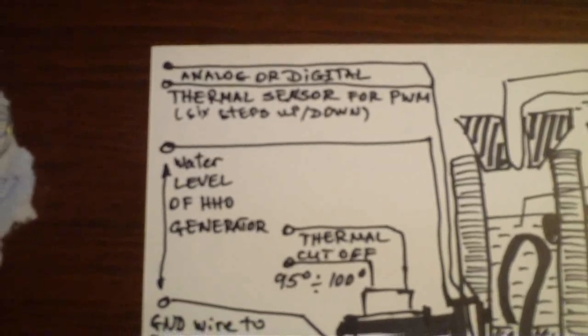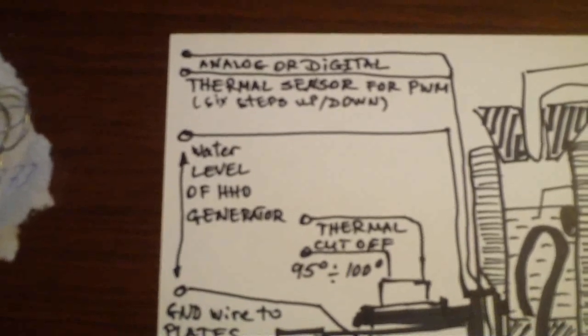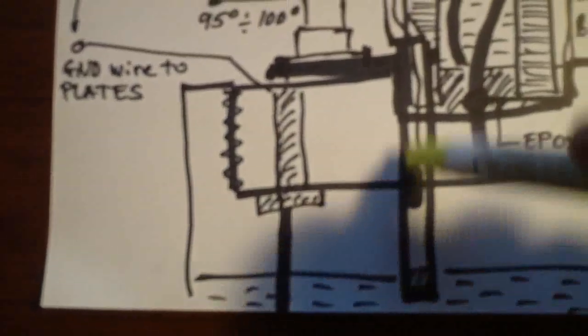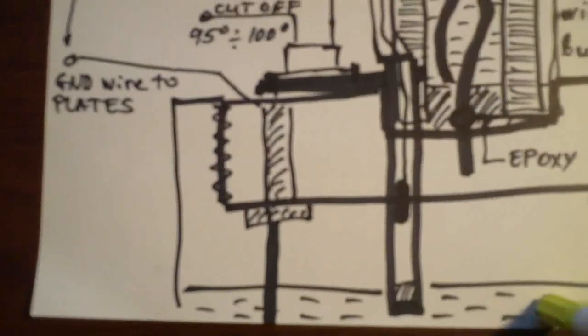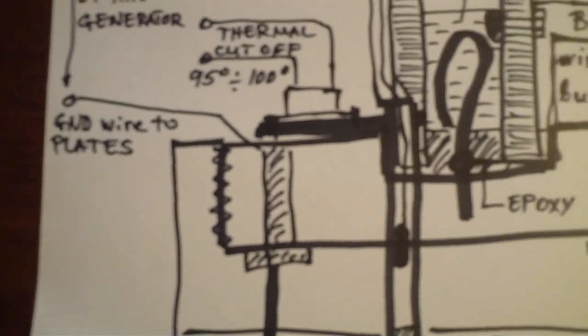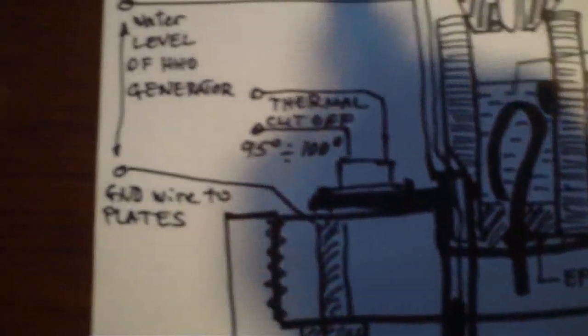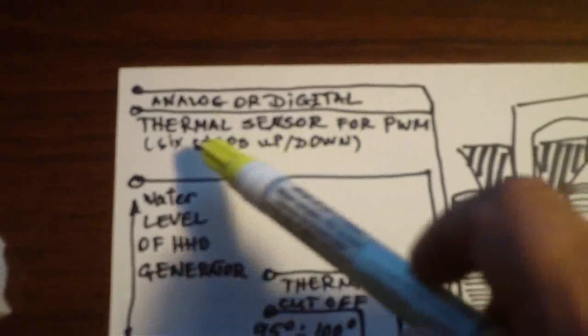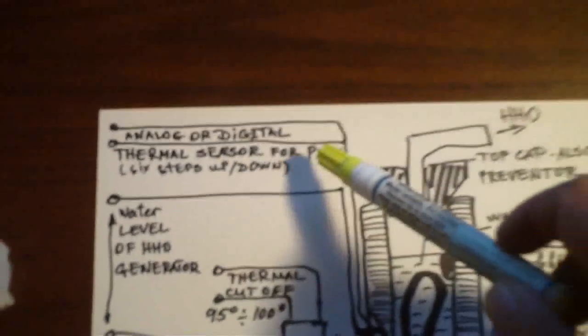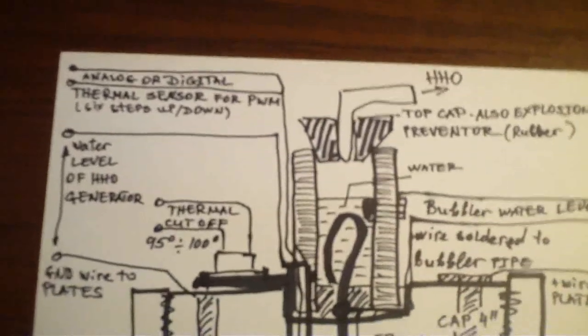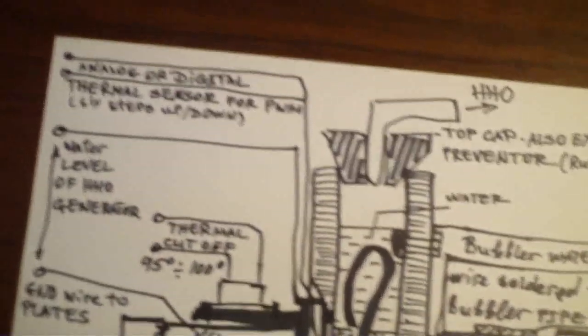The HHO system is giving you the temperature of the generator itself because of the thermal conduction between the copper pipe. You can have the temperature in the water in the generator, so you can adjust the PWM. As I mentioned, there are six steps for adjusting the PWM itself versus the temperature which is in the generator.